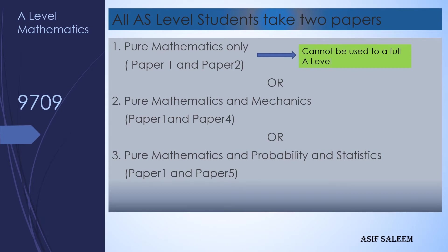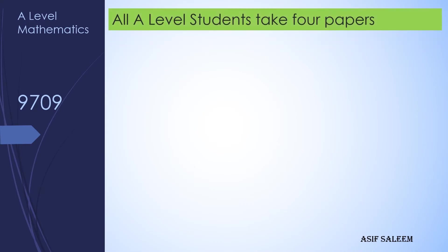However, not all options lead to A-Level. The first option — Paper 1 and Paper 2 — will not lead you to complete A-Level. After choosing option one, there is a full stop; you cannot proceed to A-Levels. This option is only for those students who are aiming for AS only.